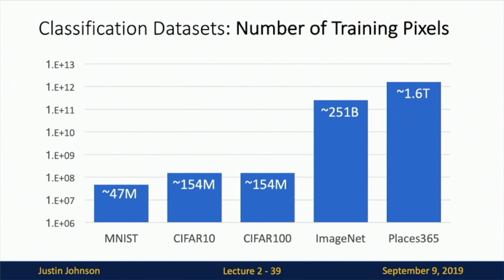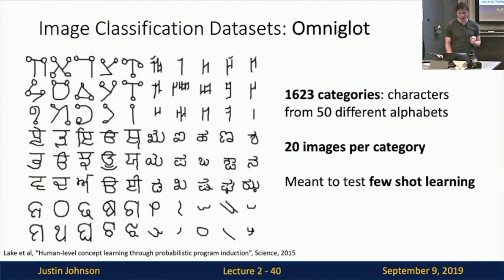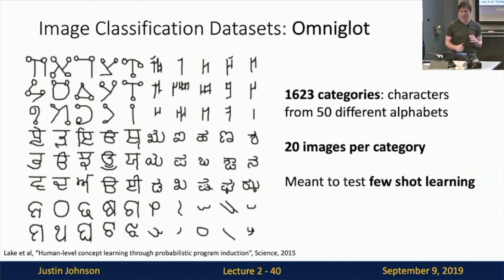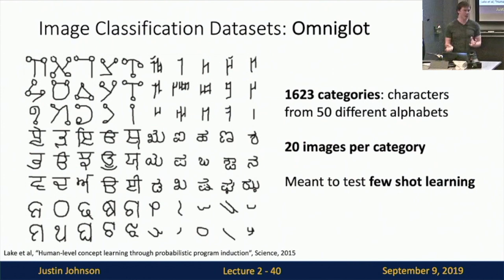One interesting direction is using ever-bigger datasets, but researchers have also explored the opposite: the Omniglot dataset pushes algorithms to learn with very little data. It has over 1,600 categories — letters from 50 different alphabets — but only 20 examples per category. This so-called low-shot classification problem is a huge emerging research area. We're sticking with CIFAR-10 in this course as a sweet middle ground between ImageNet's complexity and MNIST's simplicity.